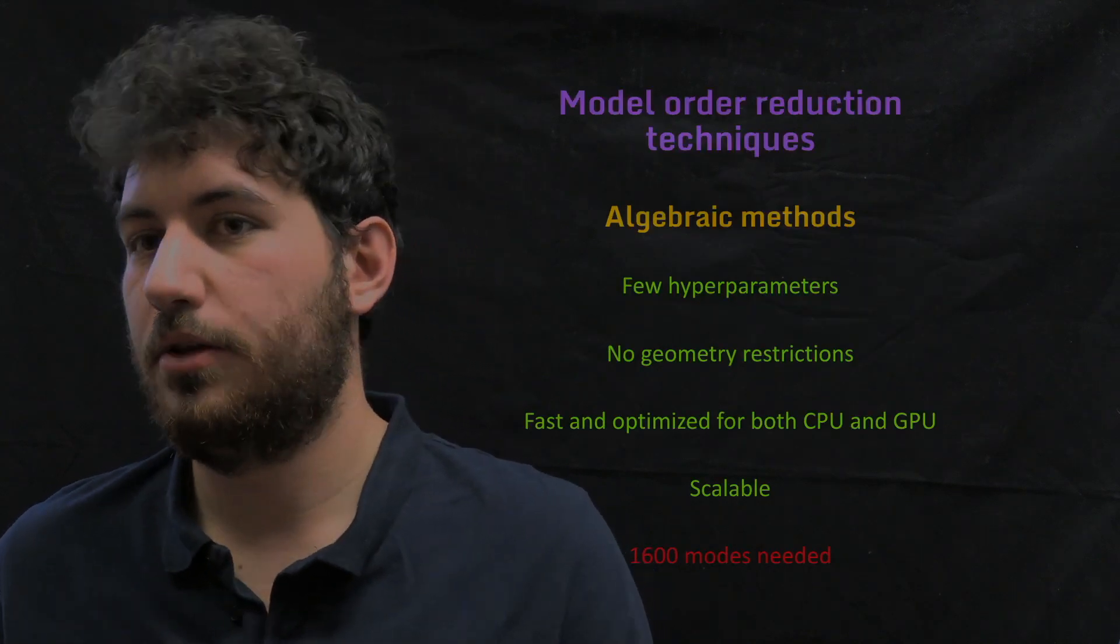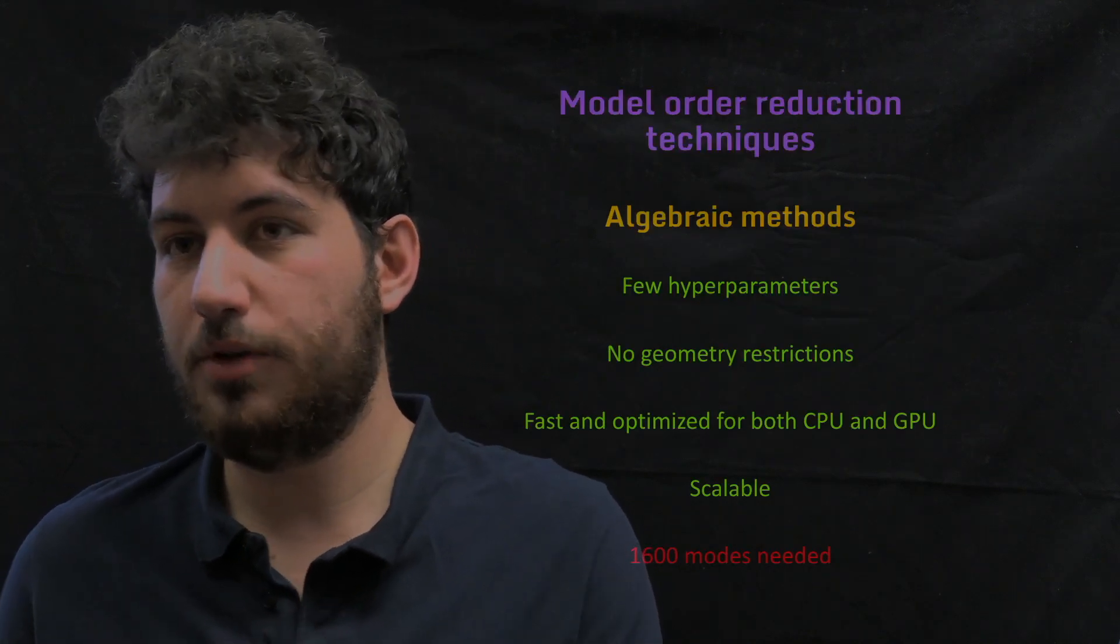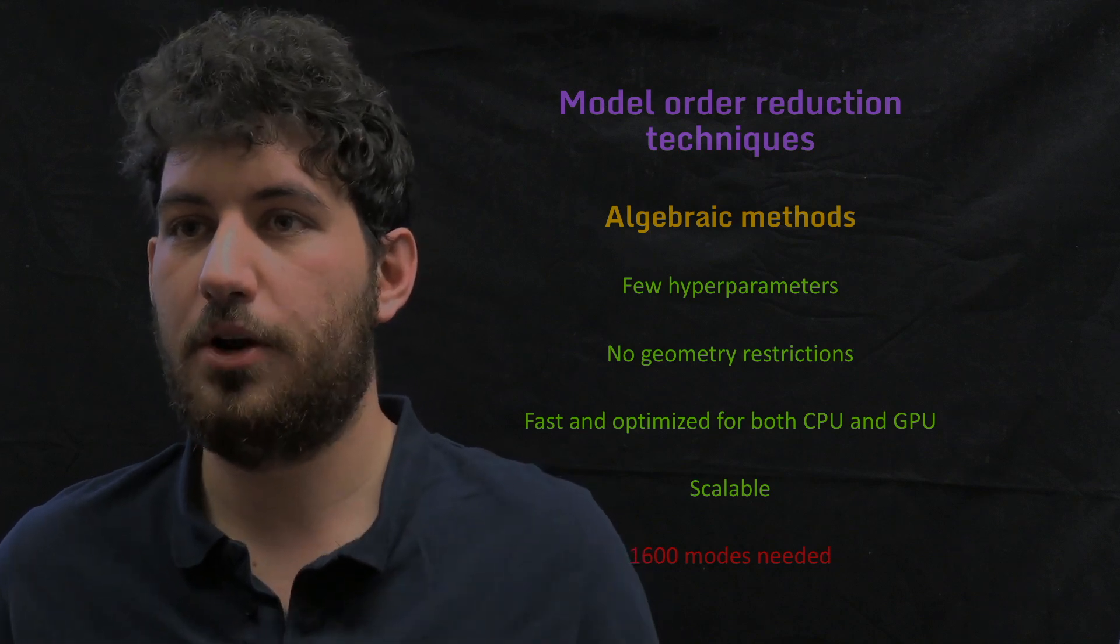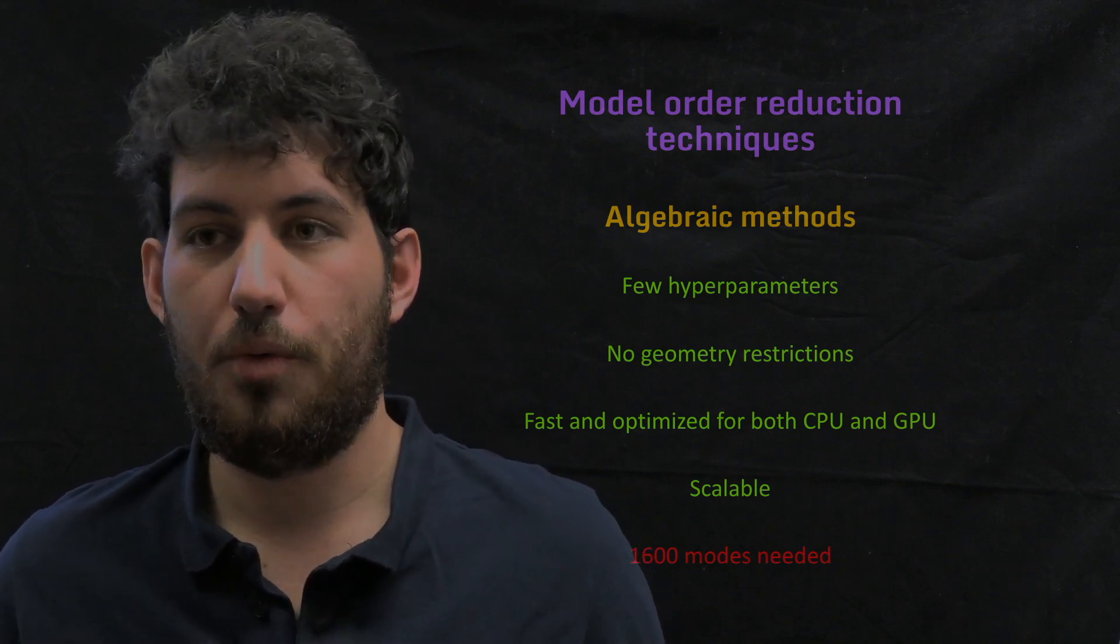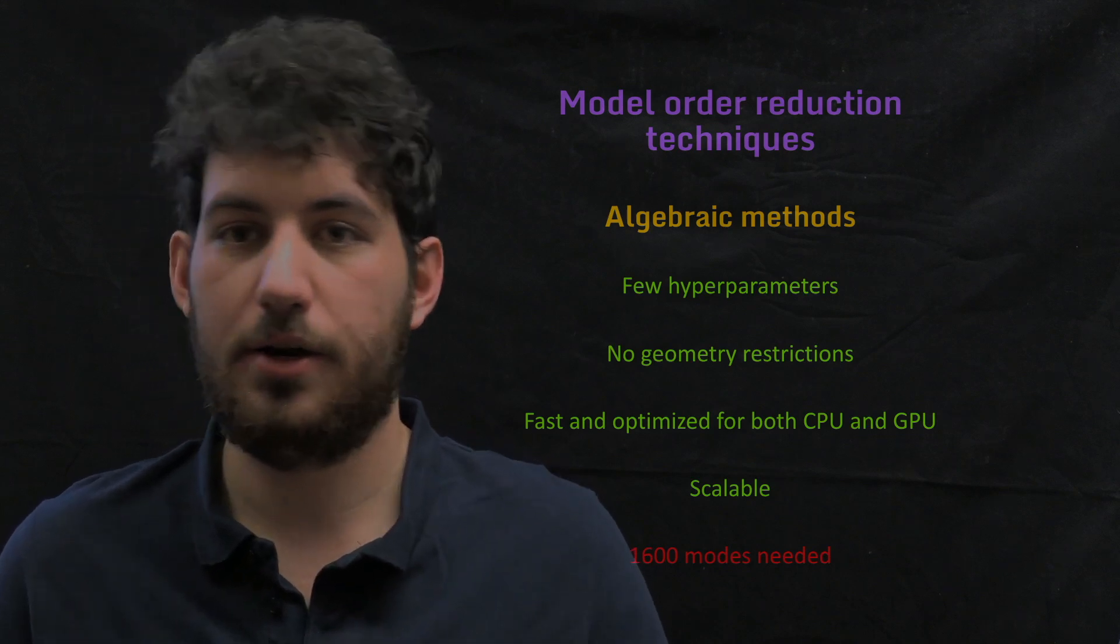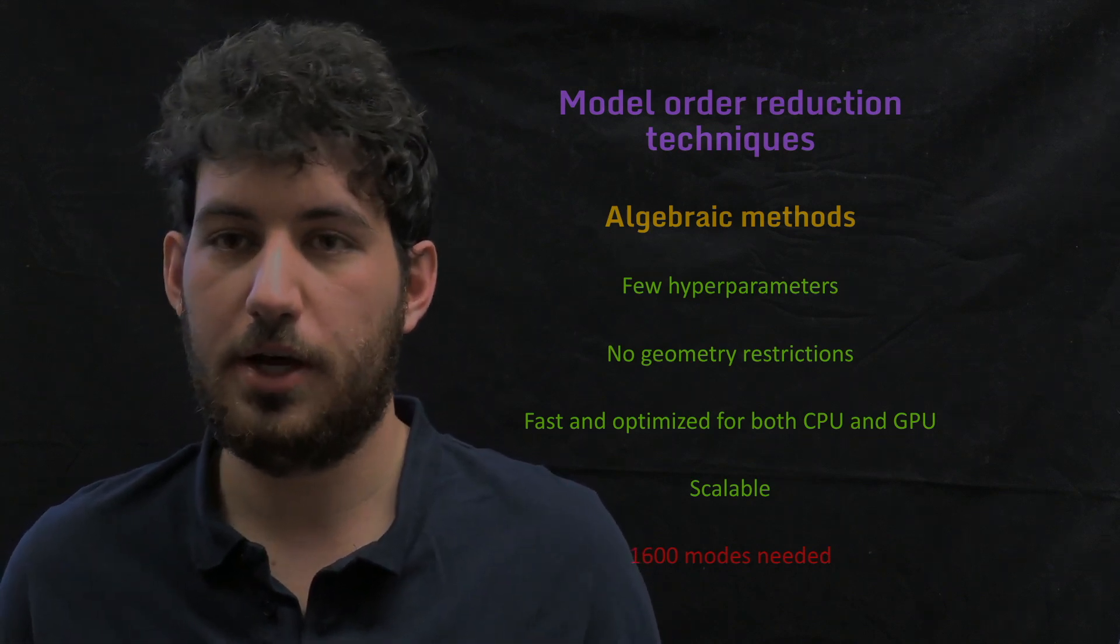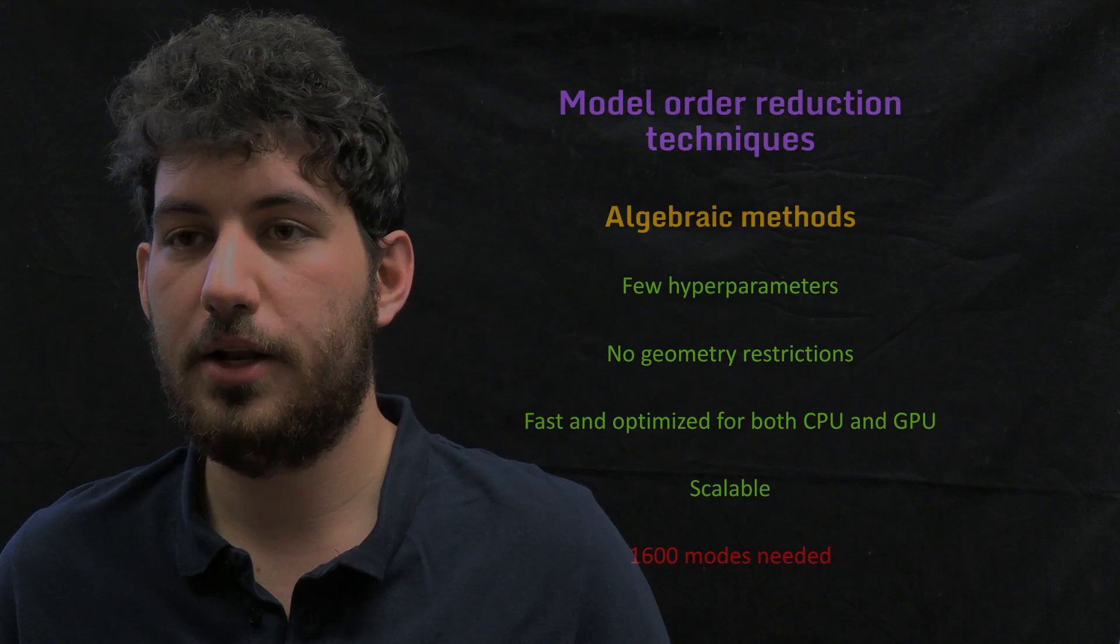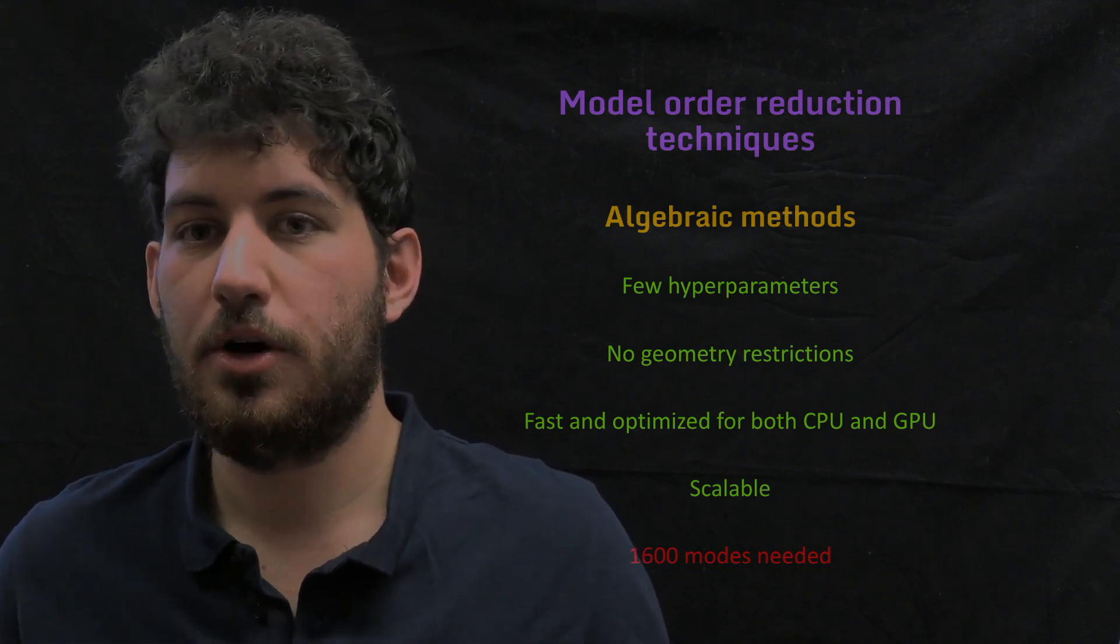So how can we do that? There are actually two different types of model order reduction techniques. On one hand, we have the algebraic methods, which would be like proper orthogonal decomposition and all SVD-based or DMD and SPOD. They are the ones that we have been using most of the time.